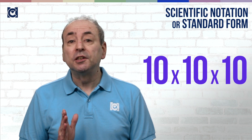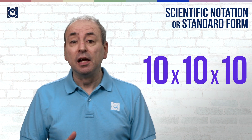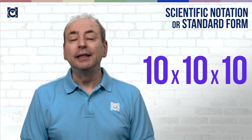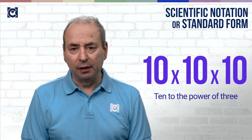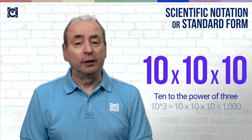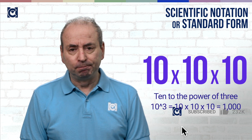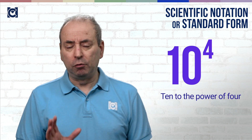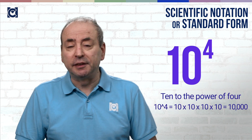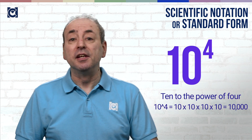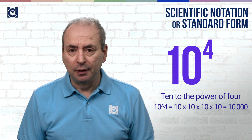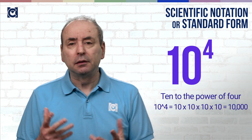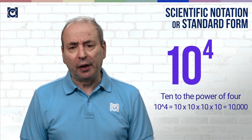10 times 10 times 10 is 10 to the power of 3, and equals 1,000. 10 to the power of 4 is 10 times 10 times 10 times 10, or 10,000, and so on. You get the picture.